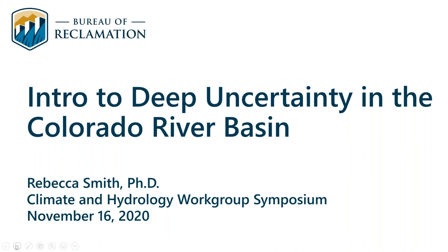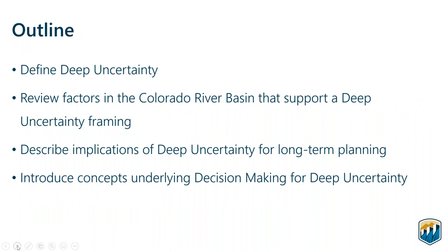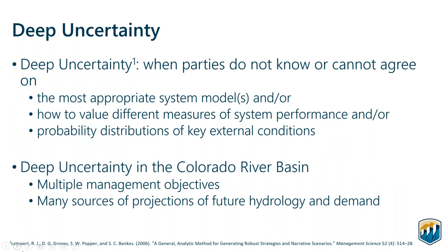My job is to introduce and define some concepts and motivate why they're important for planning in the Colorado River Basin, and hopefully provide a good primer for understanding the rest of the presentations. Deep uncertainty exists when parties do not know or cannot agree on the most appropriate system models, and/or how to value different measures of system performance, and/or probability distributions of key external conditions.